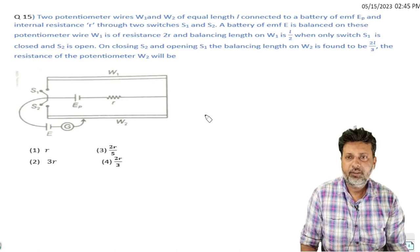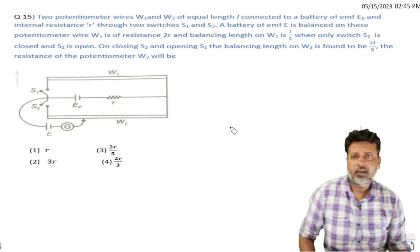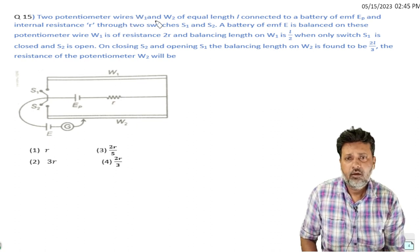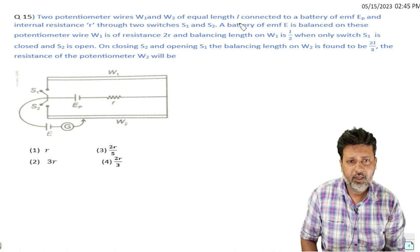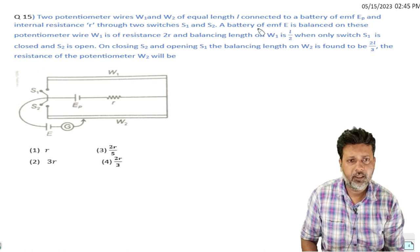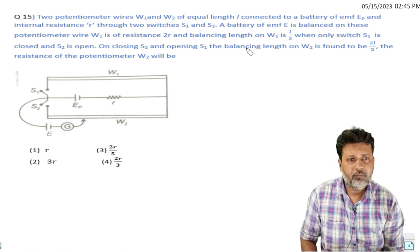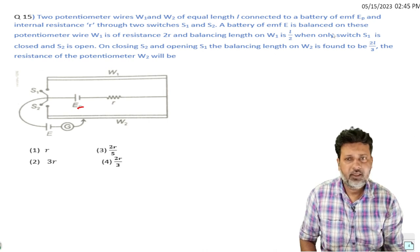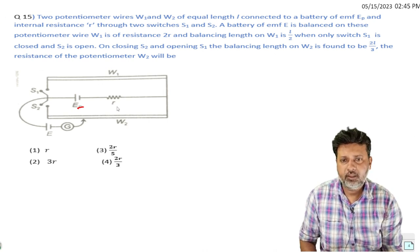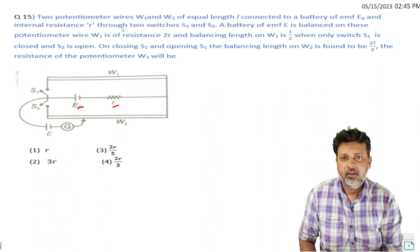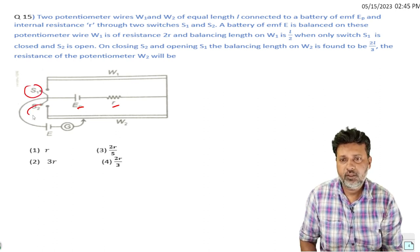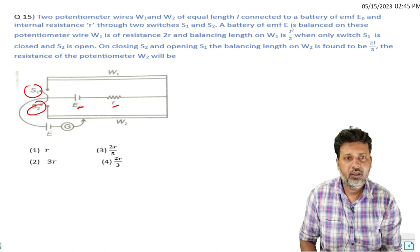Next question. Two potentiometer wires W1 and W2 of equal length are connected to a battery of emf E_p and internal resistance small r through two switches S1 and S2.